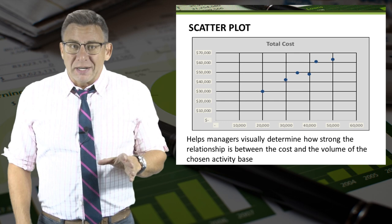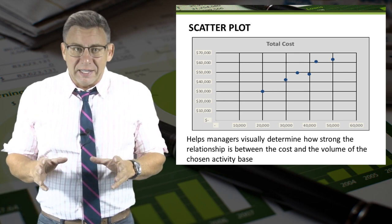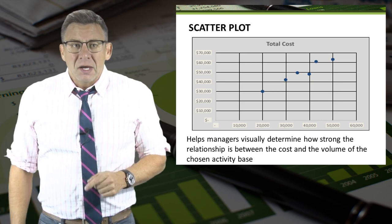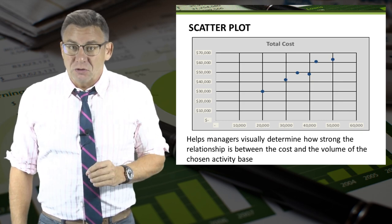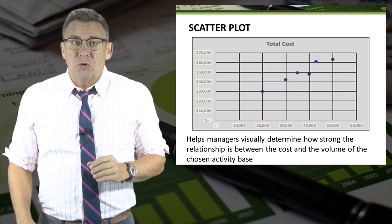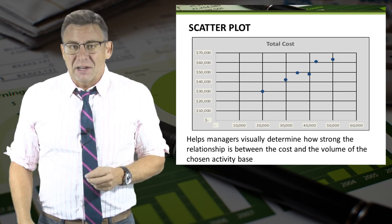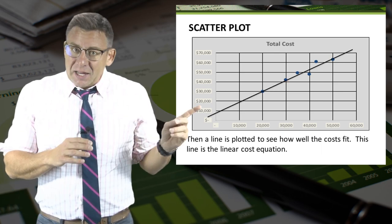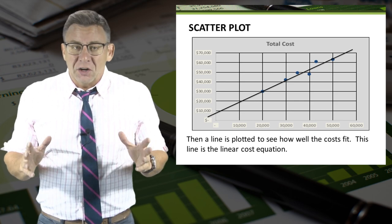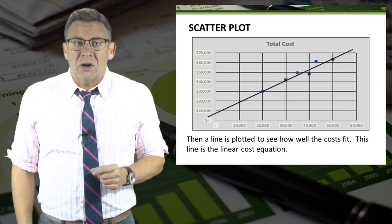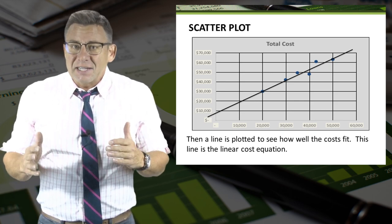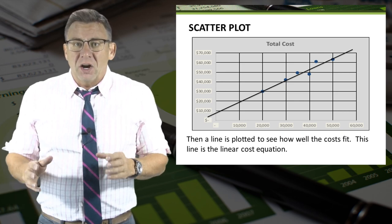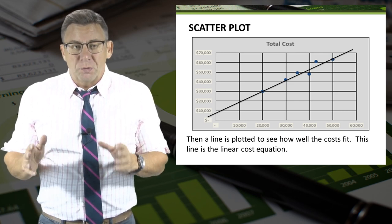Scatter plots help managers visually see how strong the relationship is between cost and volume, but it is nearly impossible to use a scatter plot to predict costs at various levels of volume. At best, a line can be added to see how linear the costs are. This line is an estimated cost equation, but again, it would be very hard to use this to predict costs.